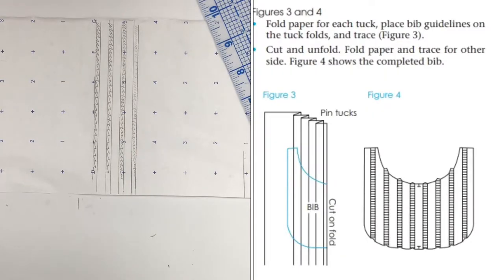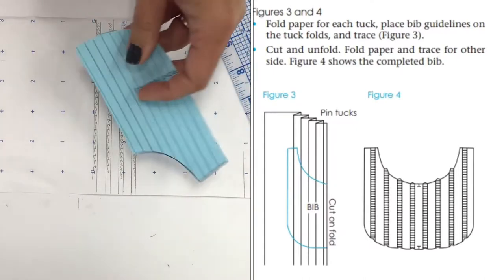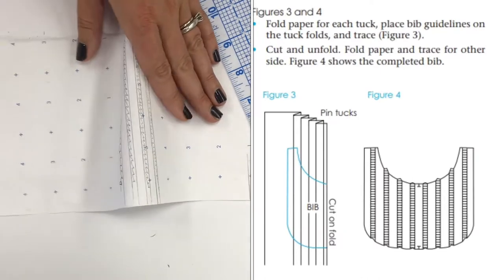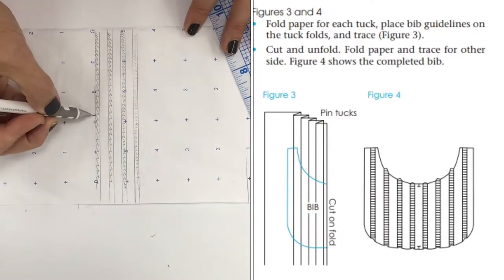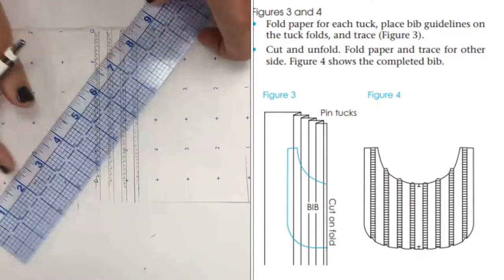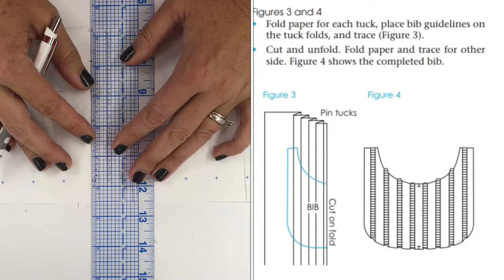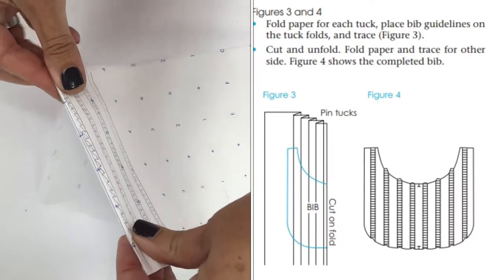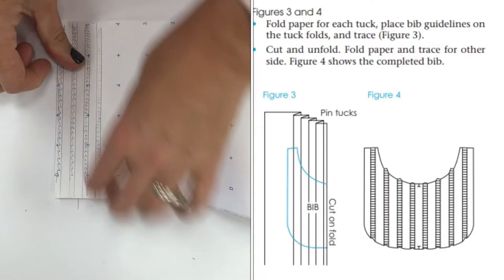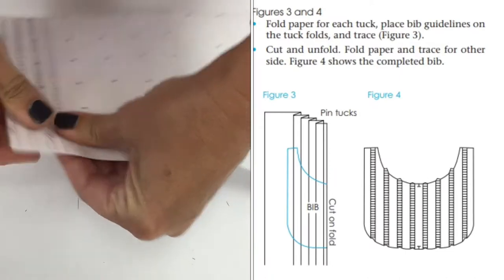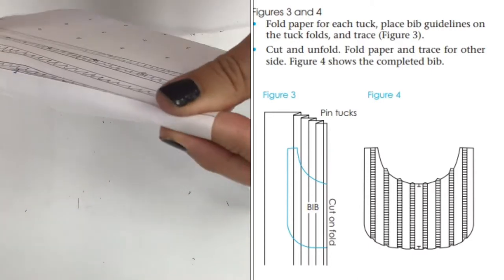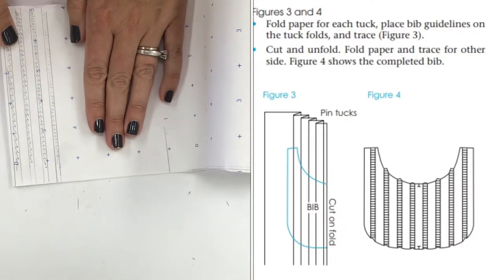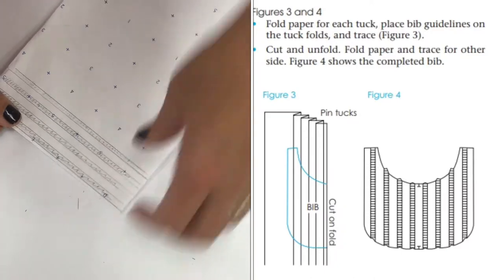For figures three and four, they want us to fold the paper for each tuck and then we're going to place our bib guidelines on those folded tucks and trace it. So they don't really say this, but looking at the illustration, they do want us to fold this paper so we can unfold it. I believe they want us to fold it so that the first tuck is one sixteenth inch away from the fold. So I'm just going to mark one sixteenth inch and that's going to be my fold line, my first fold. Now they want us to fold each of the tucks. A little tricky on the double paper, but I think we can do it.